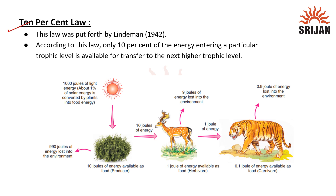10% law. This law was put forth by Lindeman in 1942. According to this law, only 10% of the energy entering a particular trophic level is available for transfer to the next higher trophic level.